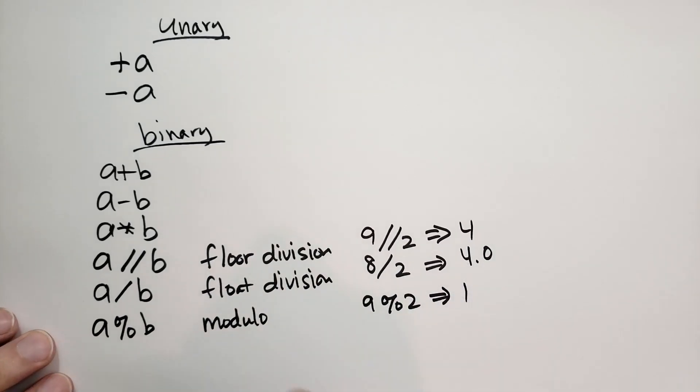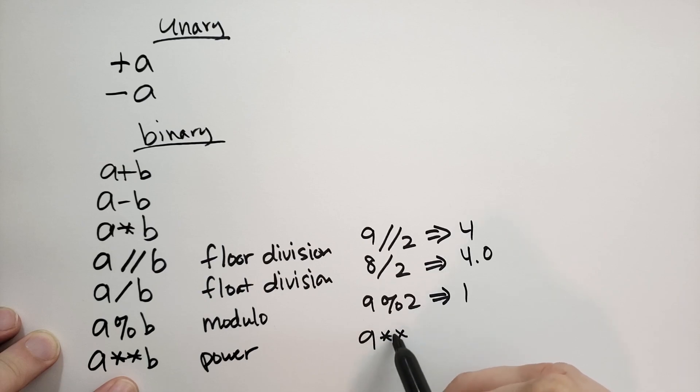And another one that I want to mention is the double star, two asterisks in a row. This is the power. So nine double star two is going to be nine times nine, which is 81. All of these operations are allowed.